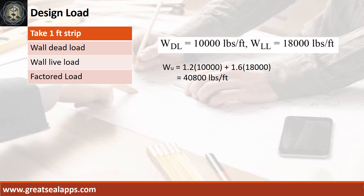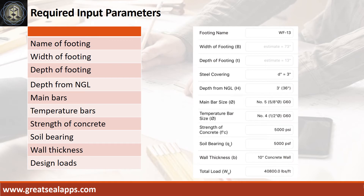The wall footing carries a uniform dead load of 10,000 pounds per foot and uniform live load of 18,000 pounds per foot, for a factored load of 40,800 pounds per foot. Input parameters: footing name WF13, depth of footing 13 inches, depth from natural grade line 3 feet, main bars 5/8-inch diameter at grade 60, temperature bars 1/2-inch diameter at grade 60, strength of concrete 5,000 PSI, soil bearing capacity 5,000 PSF, wall thickness 10-inch concrete wall, and total load 40,800 pounds per foot.